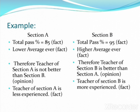Here is another example. There are two classes: Section A and Section B. Section A has a total pass percentage of 85% and Section B has a total pass percentage of 95%. These are facts — you can verify the results by checking the results sheet and counting how many students passed. In both cases, the pass percentage can be verified, so this is a fact.